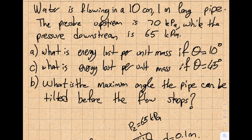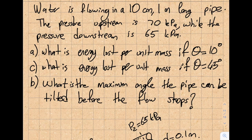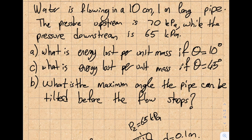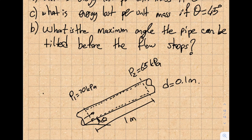I'm going to solve an example. Water is flowing in a 10 centimeter, 1 meter long pipe. The pressure upstream is 70 kilopascal, while the pressure downstream is 65 kilopascal. Part A: What is the energy lost per unit mass if theta equals 10? Theta is basically in the figure over here. The angle that I have here is 10 degrees. What will be my energy loss per unit mass?